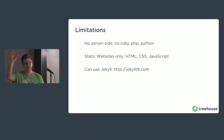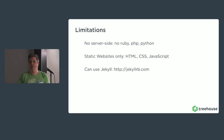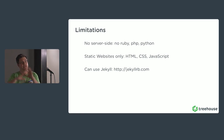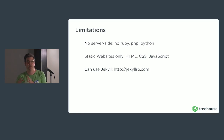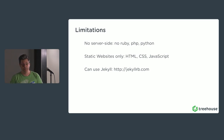It does support something called Jekyll. Jekyll is basically a static website generator. It uses Ruby, so you can run some Ruby command and it creates your navigation, builds all the pages, and you get a static website relatively easily. Static just means regular index.html, CSS, JavaScript — no server-side programming. GitHub Pages supports Jekyll, so you can use it to create a static website and push it up to GitHub for the world to see.